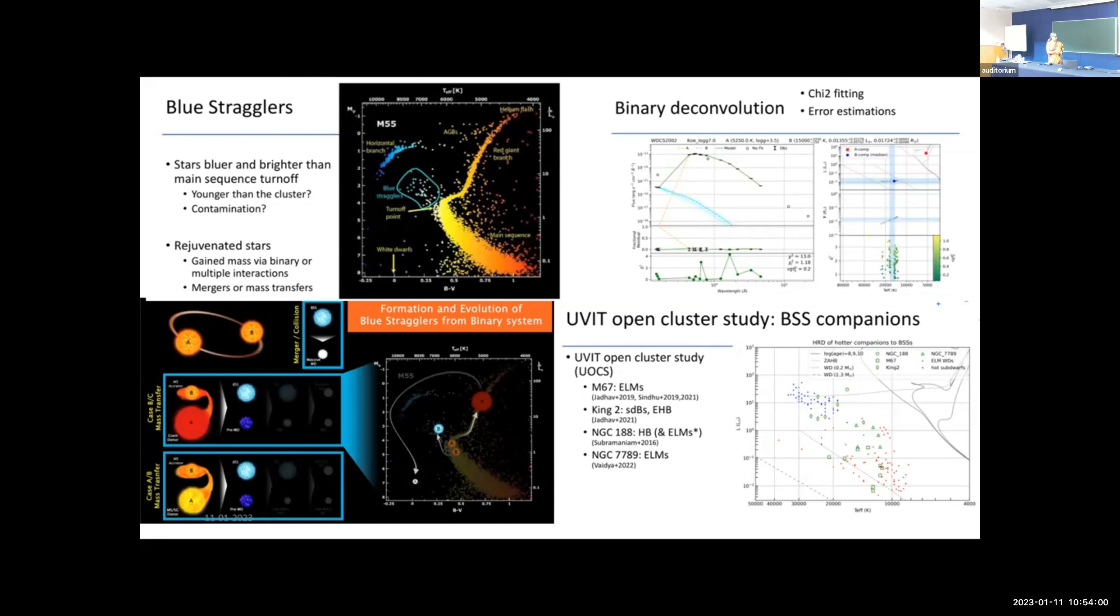The formation mechanism of blue stragglers is thought to be two stars. They're actually still on the main sequence burning hydrogen, so they must have gained mass somehow. It's a binary system where a star gains mass out of another star and becomes rejuvenated and becomes hotter and brighter. But this rejuvenation can happen either by collision or spiraling in of a binary system or mass transfer. So they result in different kinds of chemistry and different types of properties within the star itself.